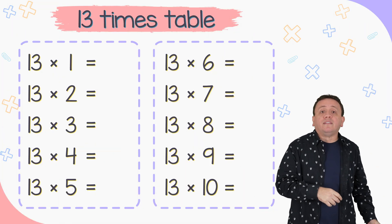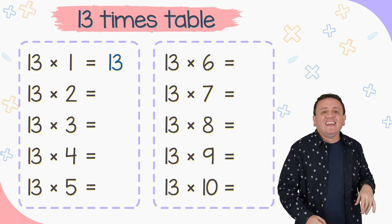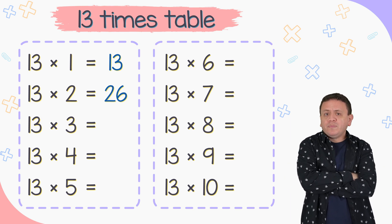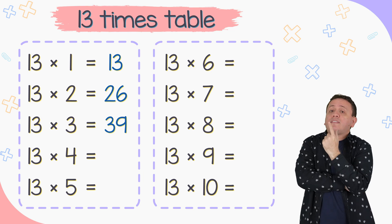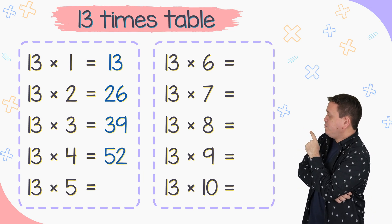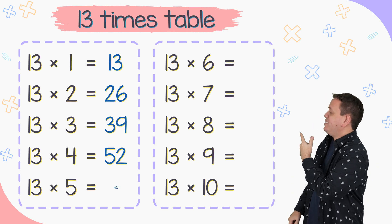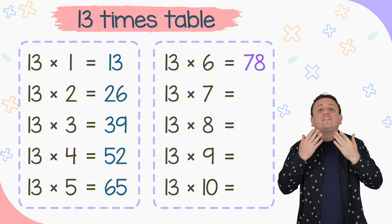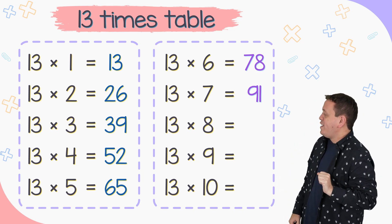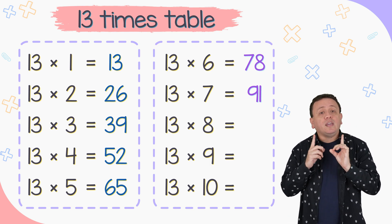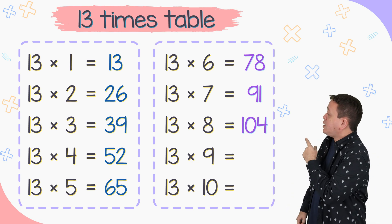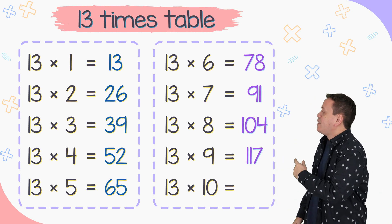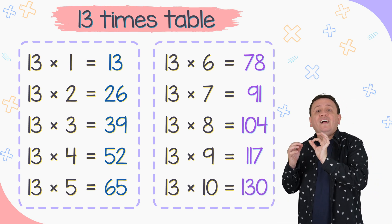And now the 13 times table. 13 times 9 equals 117. And last but not least, 13 times 10 equals 130.